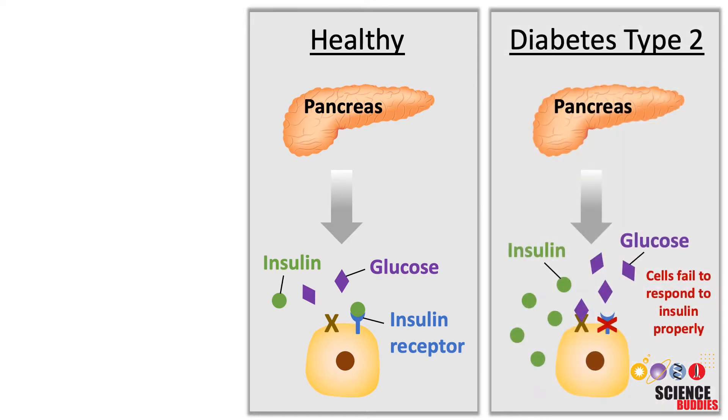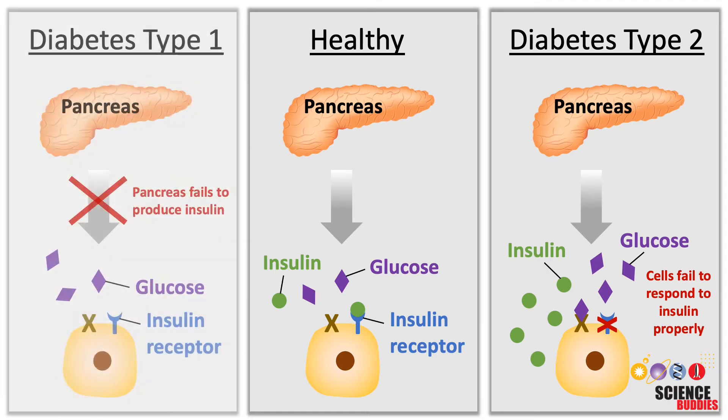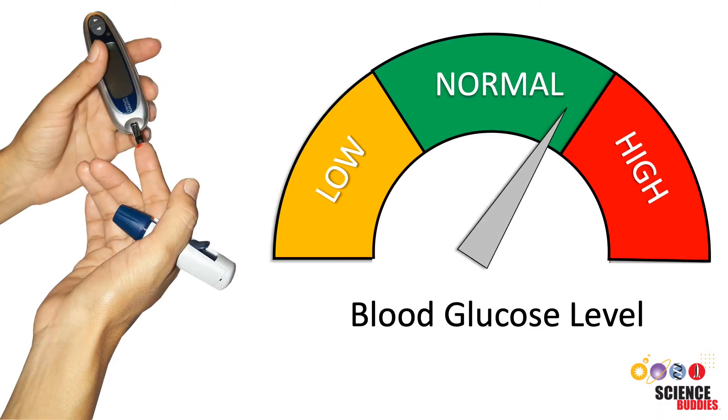In patients with diabetes, the body may not respond to insulin properly, may not produce enough insulin, or may stop producing insulin altogether. That is why many people with diabetes need insulin as medication to manage their blood glucose levels.